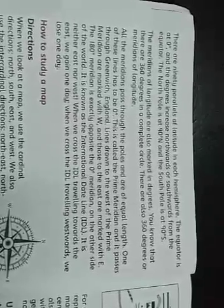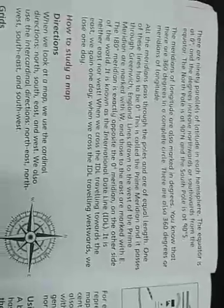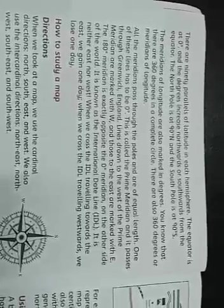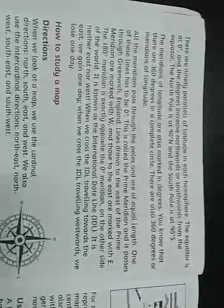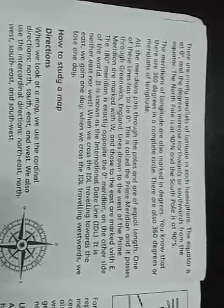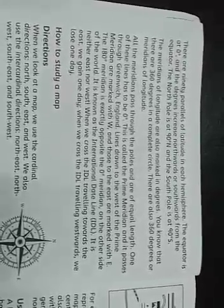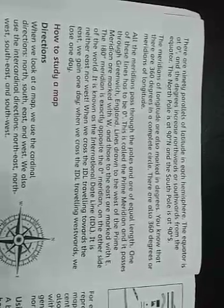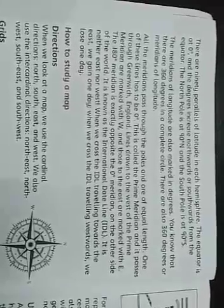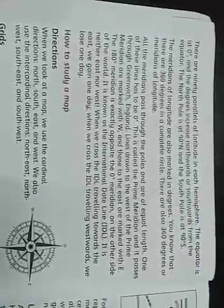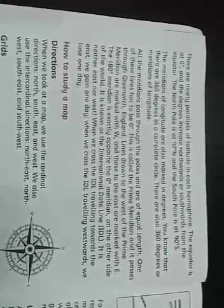One of these lines has to be 0. This is called the prime meridian, and it passes through Greenwich, England. The lines drawn to the west of the prime meridian are marked with W, and those to the east are marked with E. The meridians are marked up to 180 degrees, which is neither east nor west.